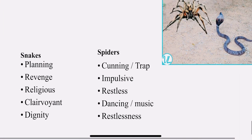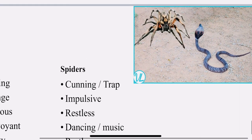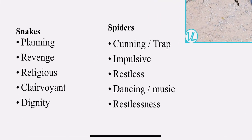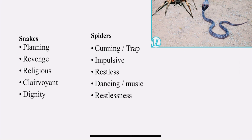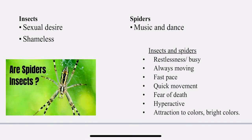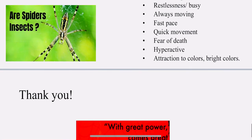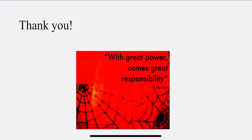The comparison between Ophidia group and the spider group: in the Ophidia group they are planning, revengeful, religious, clairvoyant, and have dignity. The spiders are cunning, impulsive, restless, dancing with music, and restless. Insects: sexual desire and shamelessness. The spiders want music and dance. Insects and spiders both share restlessness — always moving at a fast pace with quick movements, fear of death; they are hyperactive with attraction to colors and bright colors. With this we come to an end of spider groups — mental characters, physical characters, and the comparison of Ophidia group, insect group, and spider groups.